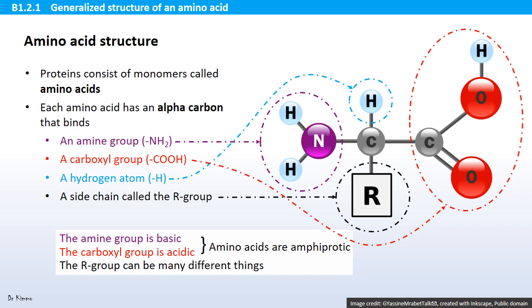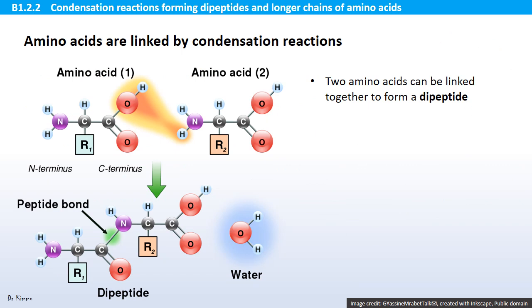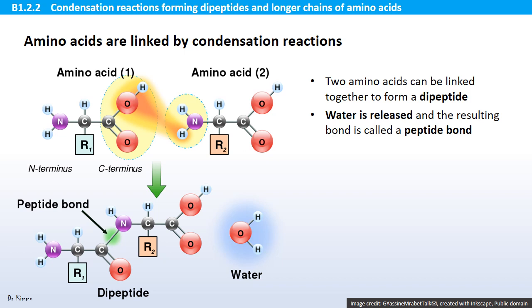The R group can be many different things. Two amino acids can be linked together to form a dipeptide. This is a condensation reaction between a carboxyl group and an amine group. Water is released and the resulting bond is called a peptide bond.